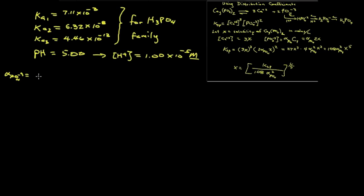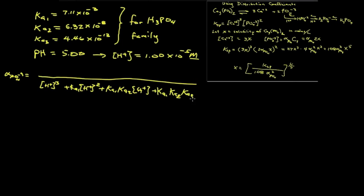Now we're going to need to calculate alpha in the phosphate form. And we know that it will have this denominator: H plus cubed plus Ka1 times H plus squared plus Ka1 Ka2 H plus, plus the product of all the Ks. And the numerator is going to be the last term in the denominator because this is the last of the family members. So it's Ka1 Ka2 Ka3.